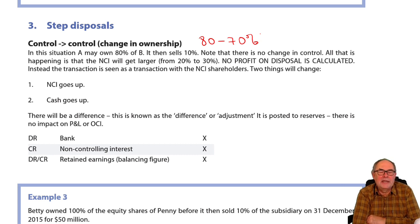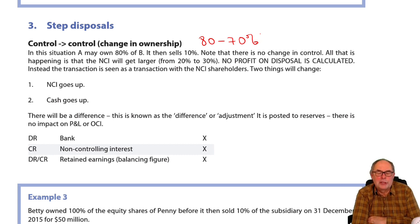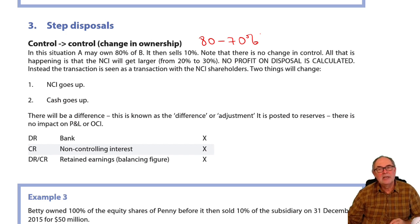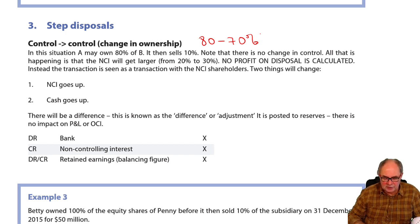This time, it's a little bit like being impoverished and having to get a lodger in. If you get a lodger in, your money goes up and your NCI will go up. There'll be a difference. Again, it's seen as a transaction between shareholders, so it has no impact on P&L, no impact on OCI, no impact on goodwill. It's simply a transaction where an adjustment is once again in the statement of changes in equity. So it's the mirror image of the last one that we looked at.